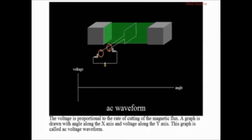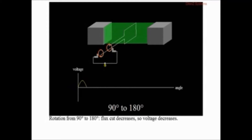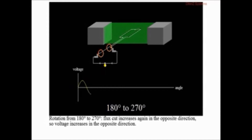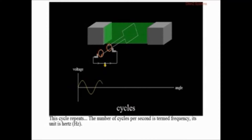The induced voltage varies with the angle of rotation. From 0 to 90 degrees, flux cutting increases so voltage increases. From 90 to 180 degrees, flux cutting decreases so voltage also decreases. From 180 to 270 degrees, flux cutting increases again in the opposite direction, so voltage increases in the opposite direction. From 270 to 360 degrees, flux cutting decreases and voltage also decreases. This cycle repeats at a regular frequency.